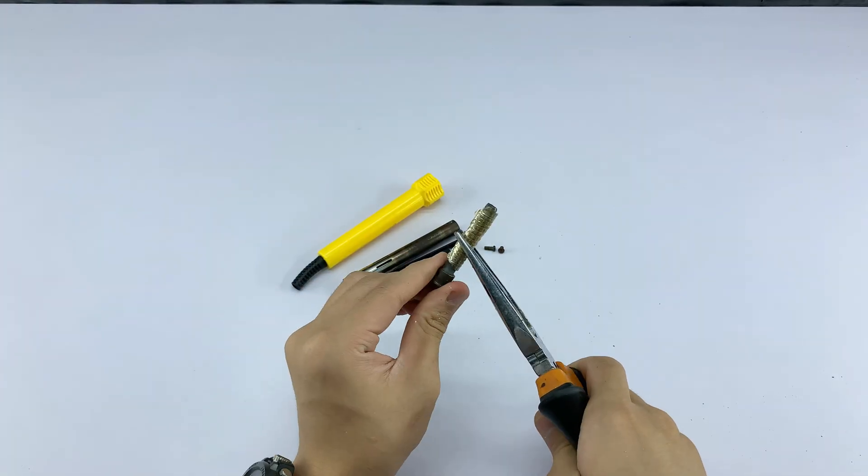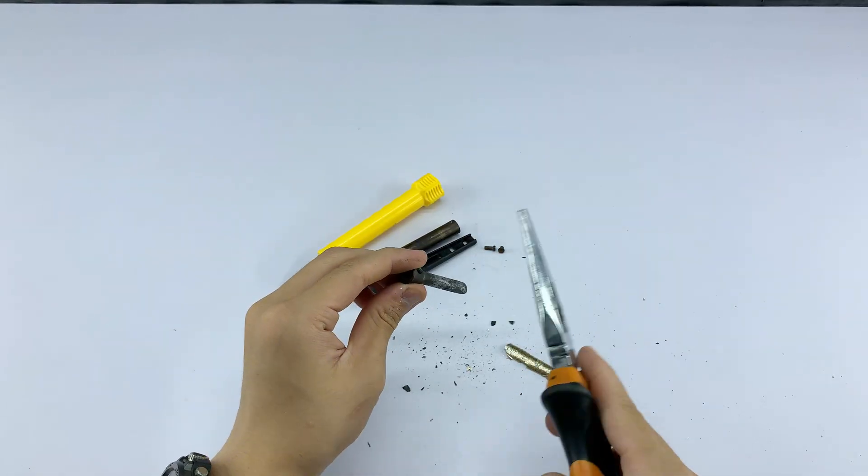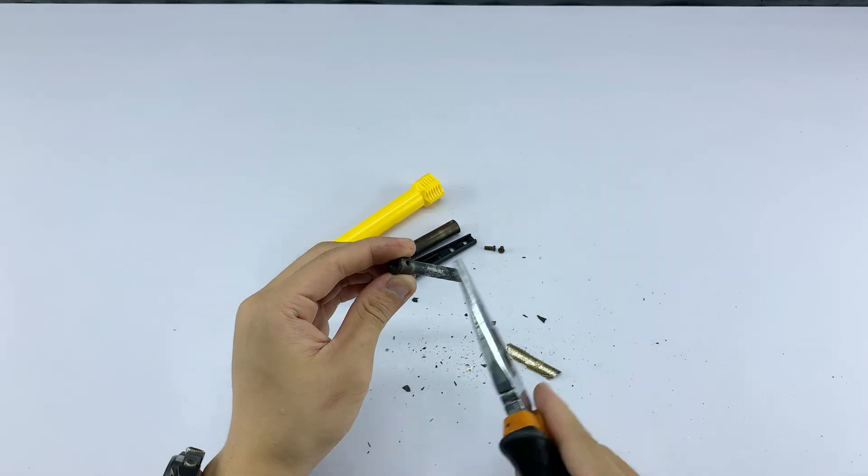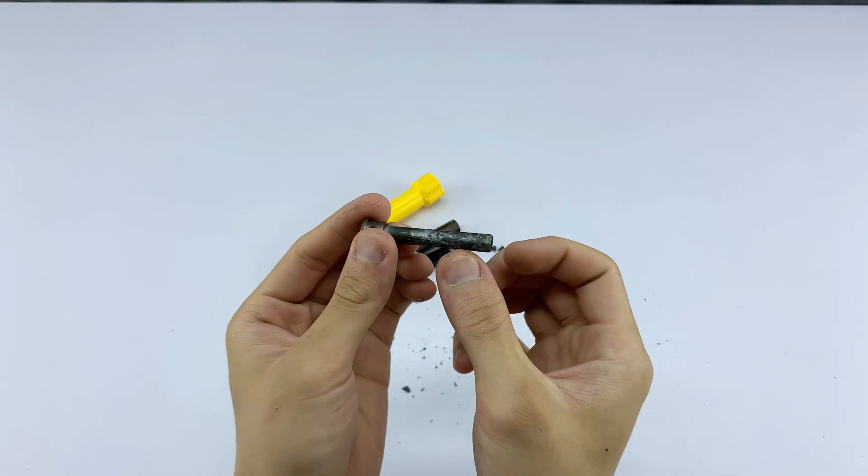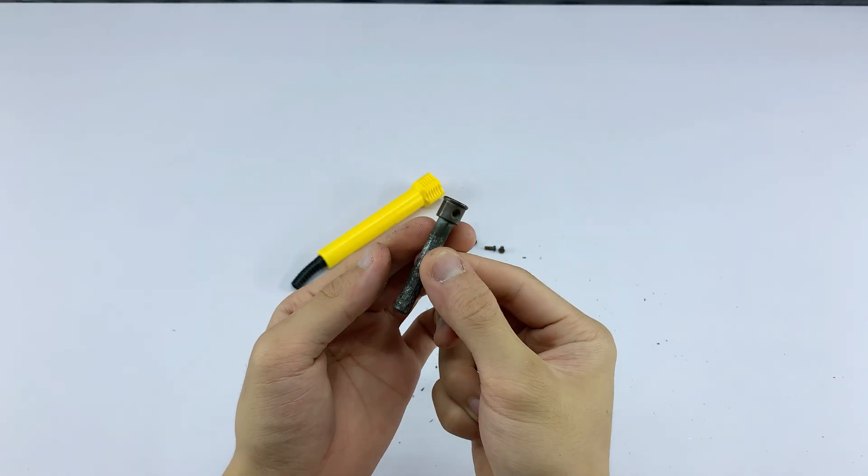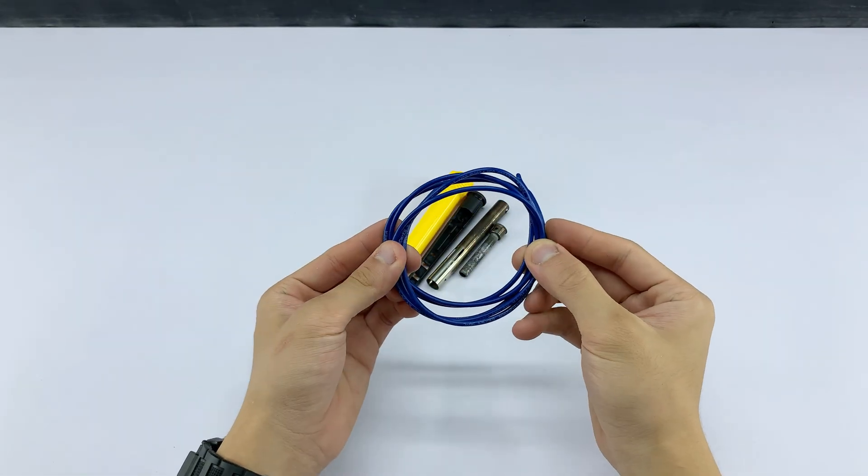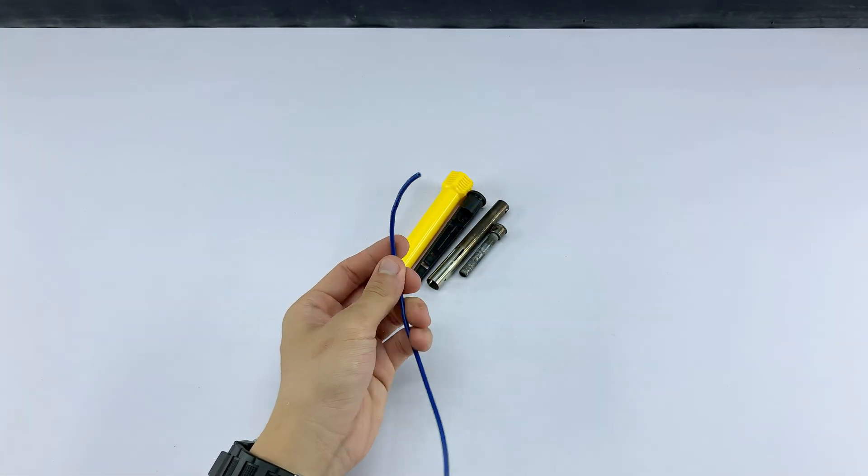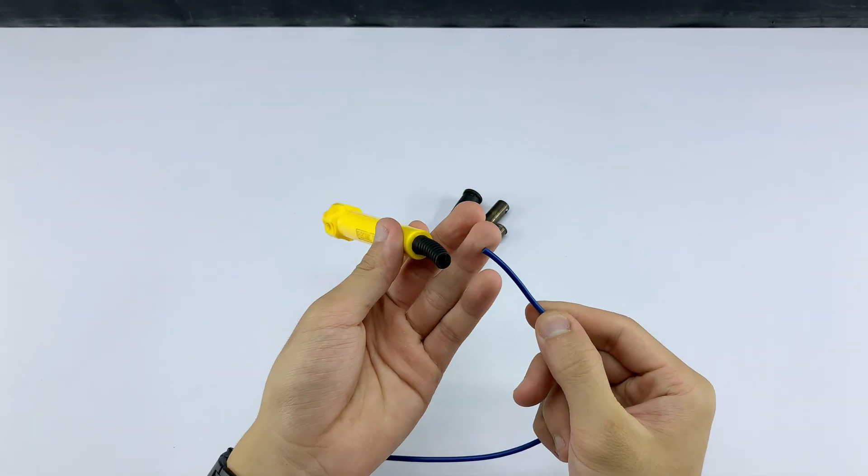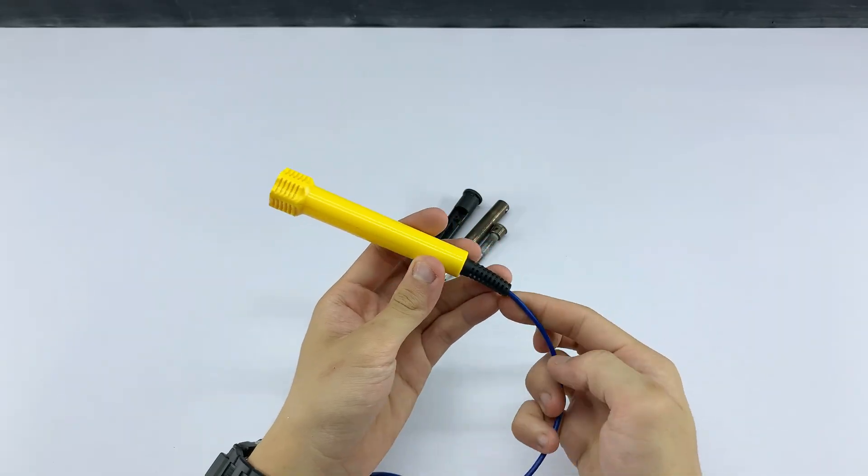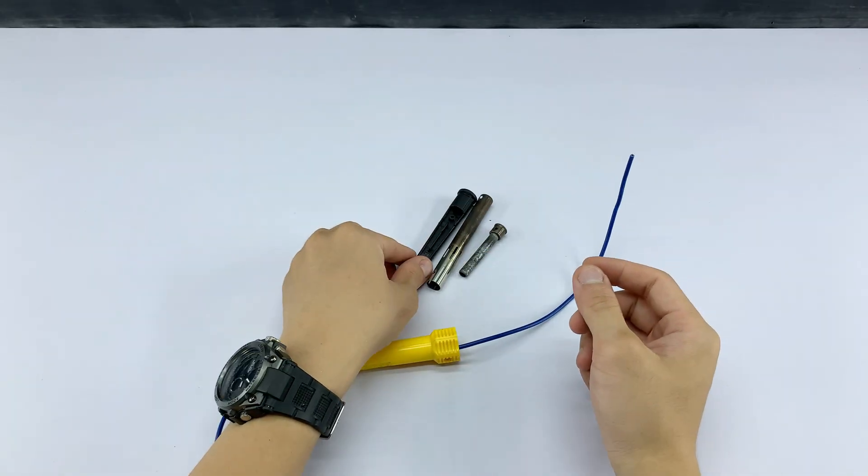I'm repeating the process with black cylindrical piece, breaking it down to further extract its internal contents. I have this blue wire, which will become our new power cord. I'm carefully threading it through the yellow handle and then into the black body of the soldering iron, ensuring it's properly aligned.